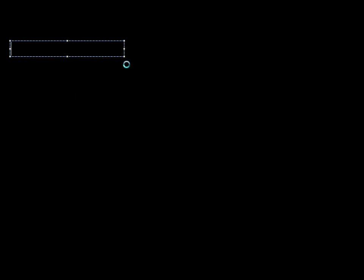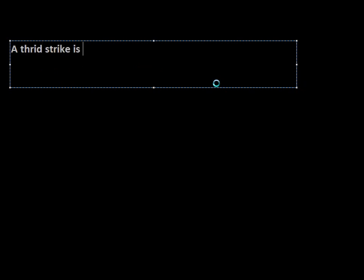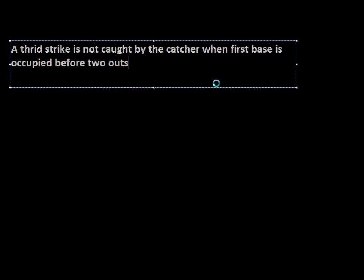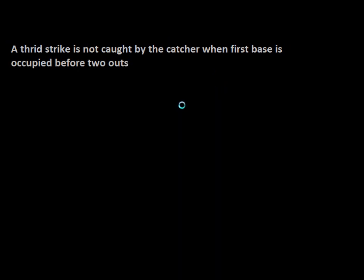The first one is if a third strike is not caught by the catcher when first base is occupied before there are two outs. Remember that if a catcher drops the third strike and first base is unoccupied — meaning there is no runner on first base — then the batter is allowed to run and attempt to beat the force play on first.